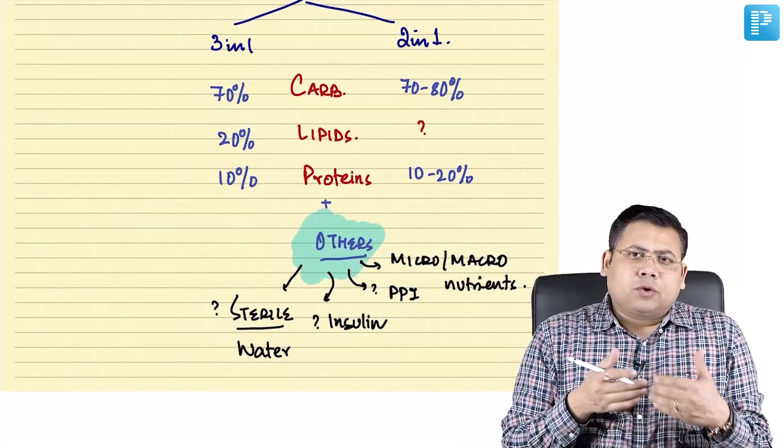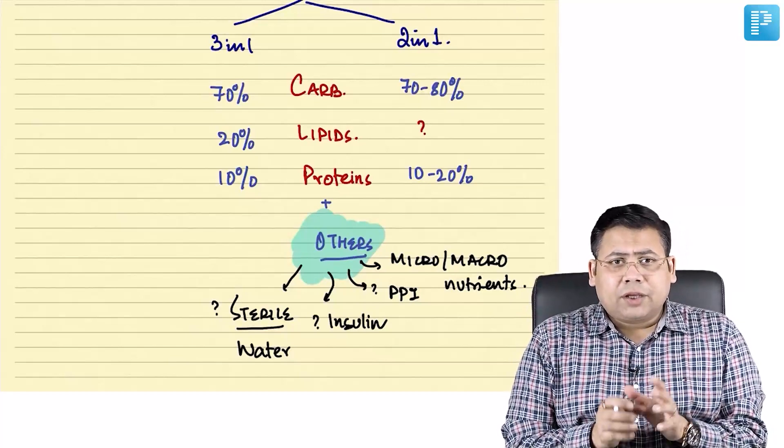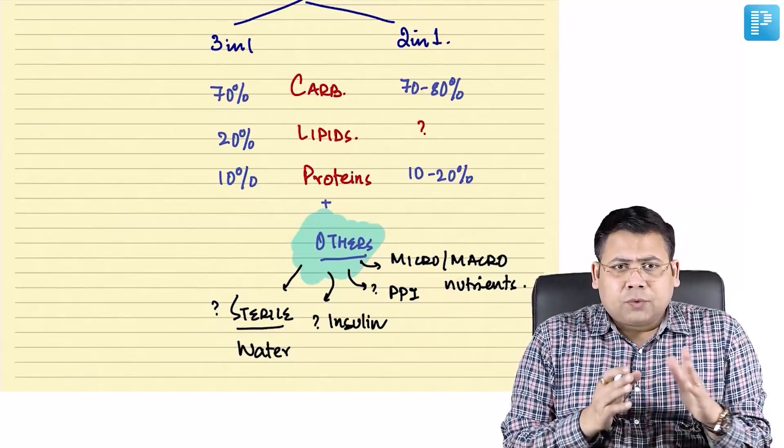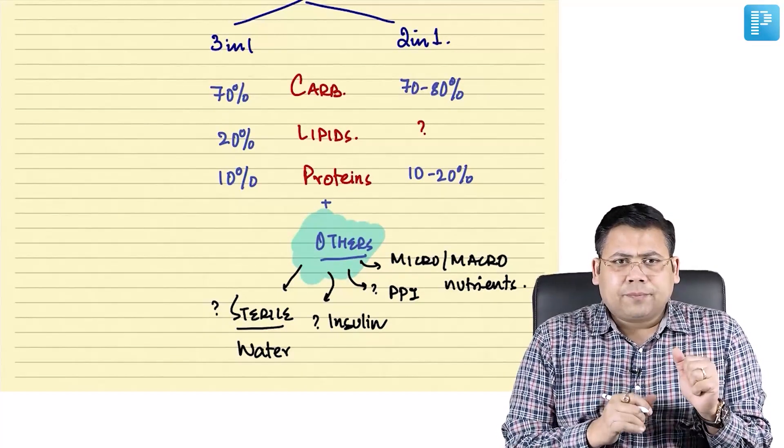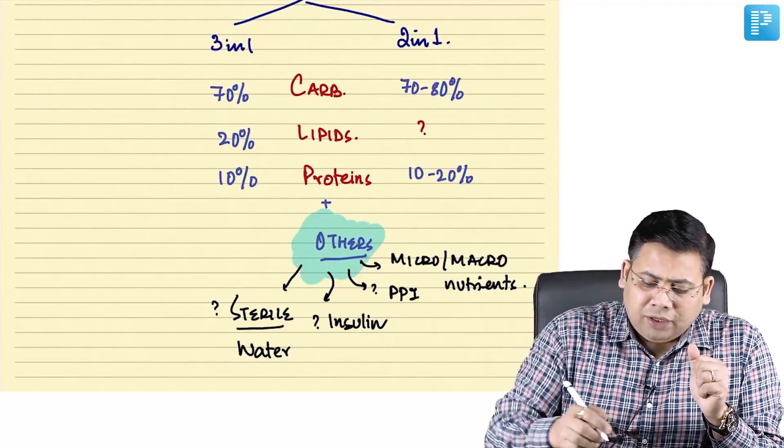What is the logic behind using two in one and three in one? Two in one is used in developed countries like US and three in one is used in developing countries like India. Why? What is the advantage of three in one?